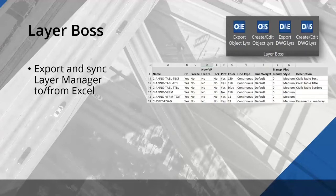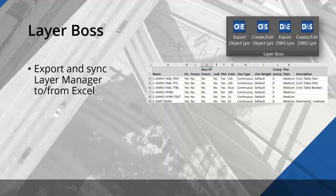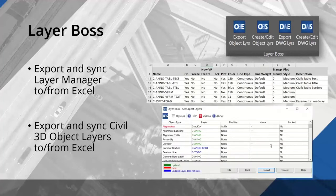Layer Boss is a tool that takes advantage of that Excel syncing. We can take the entire layer manager — that core set of your standards — and export the whole thing to Excel. It exports our line types, plot styles, and line weights, all into Excel so we get all the information you'd have working right within AutoCAD but with all the power and flexibility of Excel. We can also export our object layers — the large table interface in Civil 3D that dictates what layer every object lands on — which is an even more painful interface where you can't edit more than one row at once.